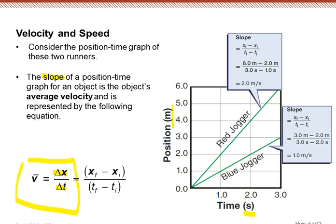So looking at the red jogger, we could find the average velocity. We could look at the change in position of 6 meters minus 2 meters divided by 3 seconds minus 1 second. So that gives us 4 on top, 2 on the bottom, and that's 2 meters per second. Whereas if we look at the slope of the blue jogger, we find that that jogger is 1 meter per second.